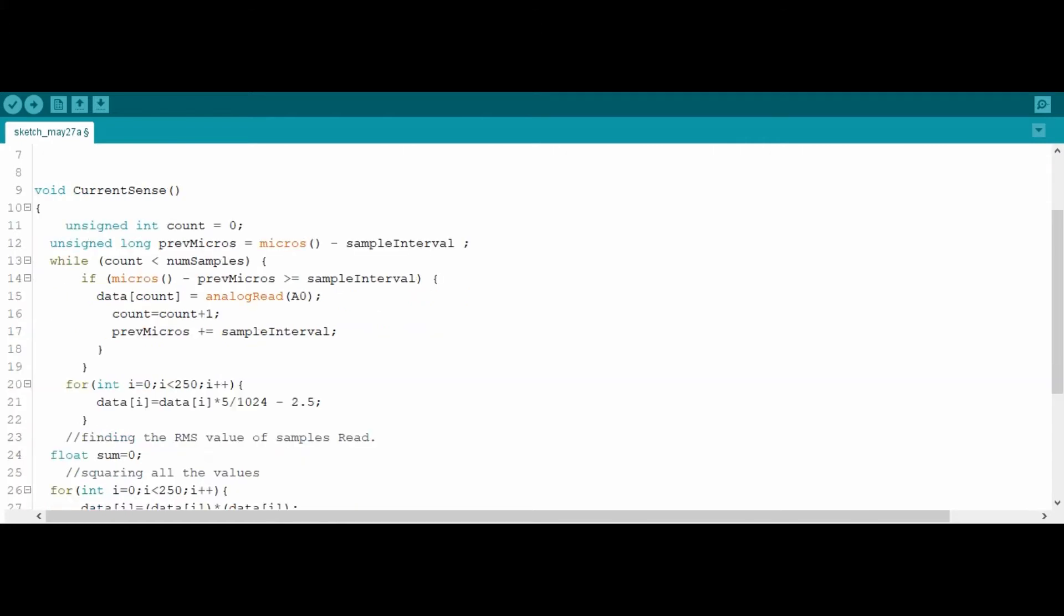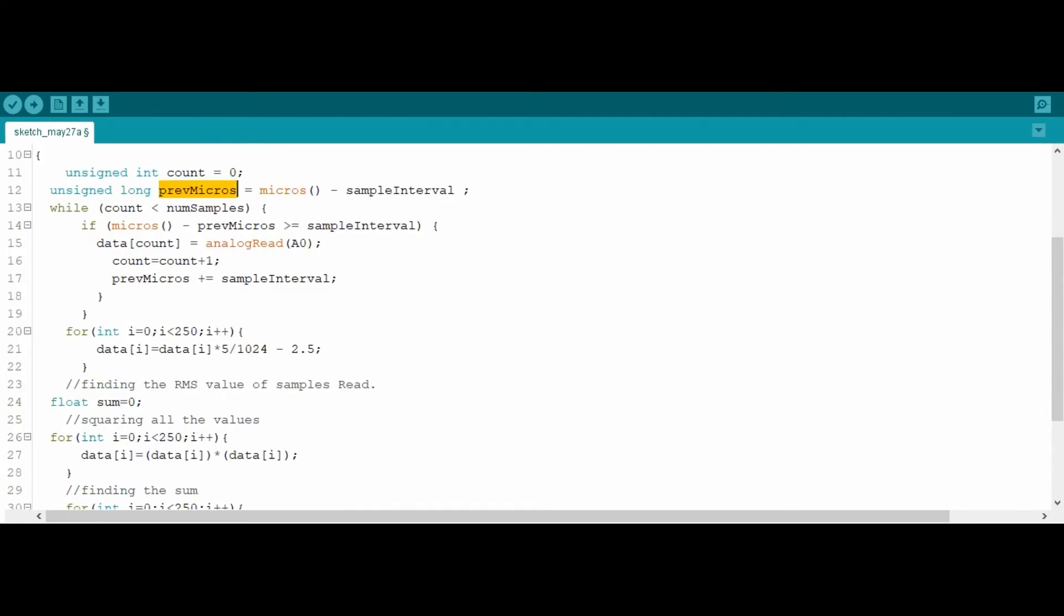Now starts our current sense function. We have a count variable starting from 0, then we calculate the previous time passed in microseconds and then we start counting in while loop until the number of samples which are 250 are completed. You see that in while loop we are collecting samples only and not performing any operations on samples.